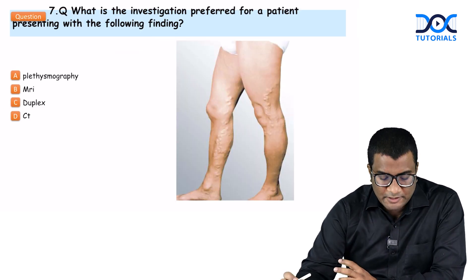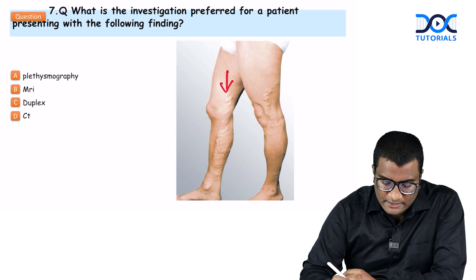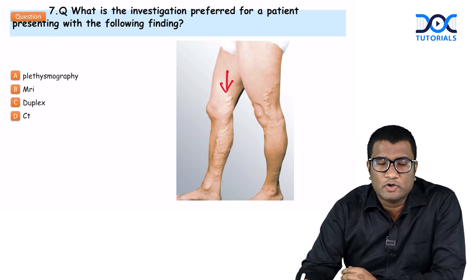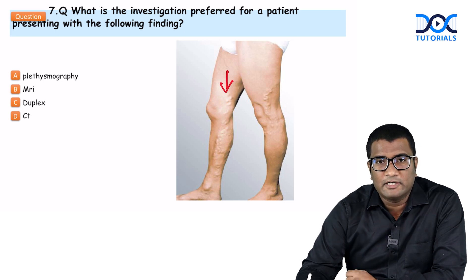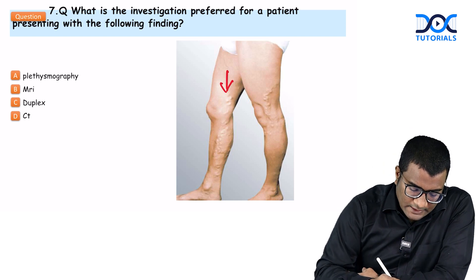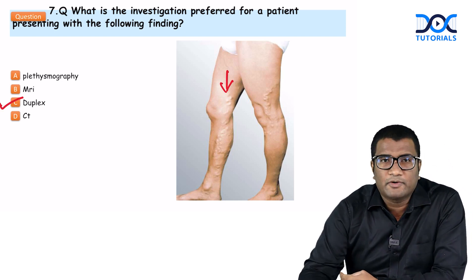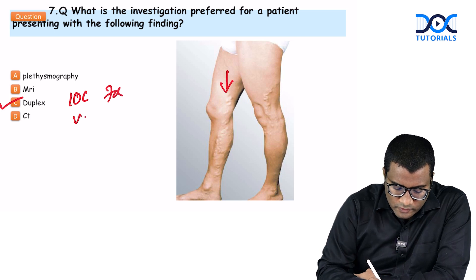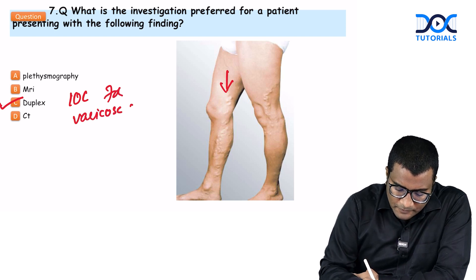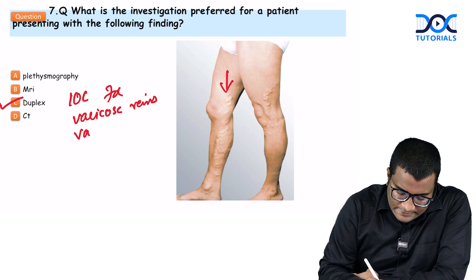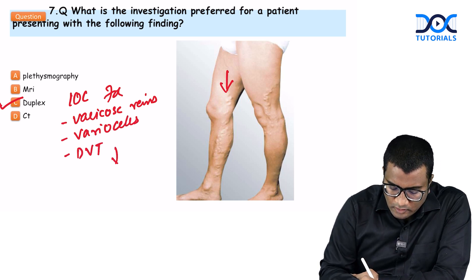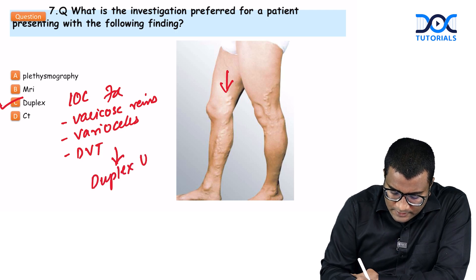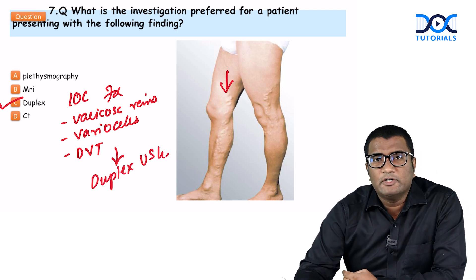Another question: a patient with tortuous veins in the lower limb — varicose veins — and they ask for the preferred investigation. The investigation of choice for varicose veins is duplex ultrasound. Remember, duplex or Doppler ultrasound is the investigation of choice for varicose veins, varicoceles in the testis, and deep vein thrombosis.